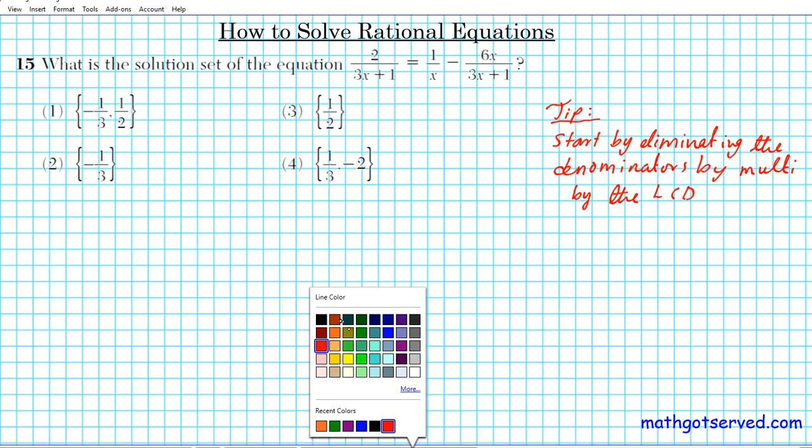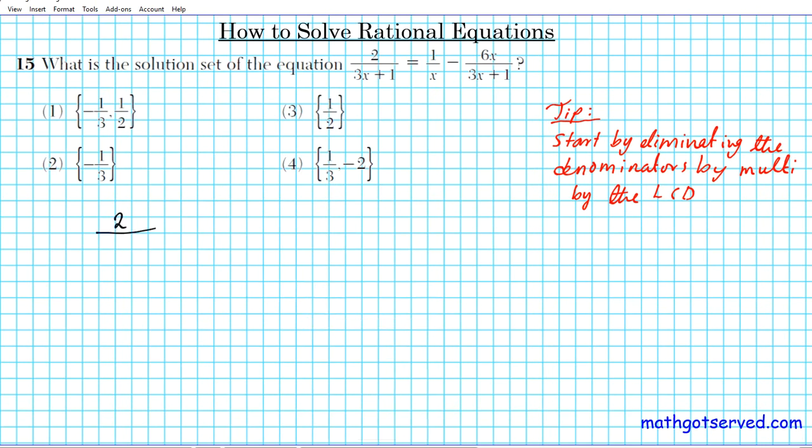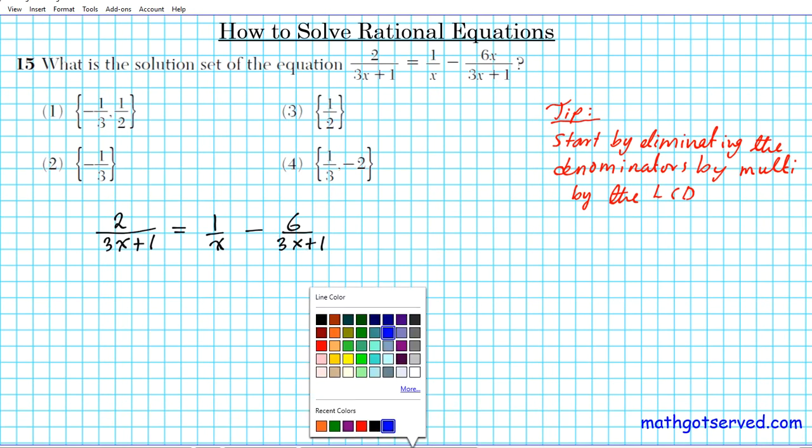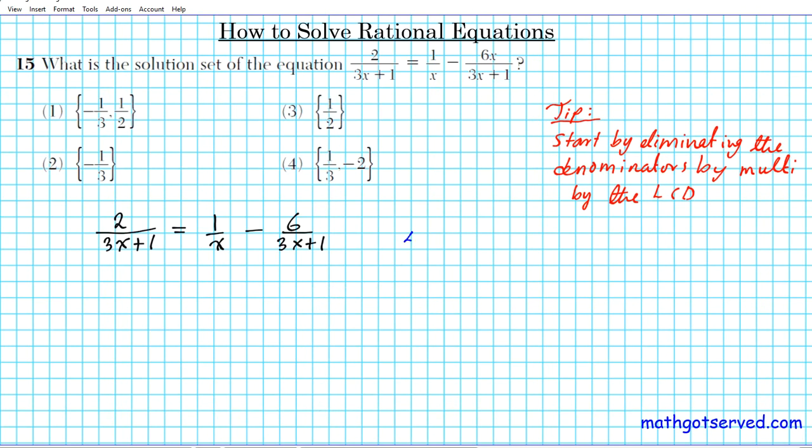To illustrate, check this out. We have 2 over 3x plus 1 equals 1 over x minus 6 over 3x plus 1. So the goal is to eliminate the denominators 3x plus 1, x, and 3x plus 1.